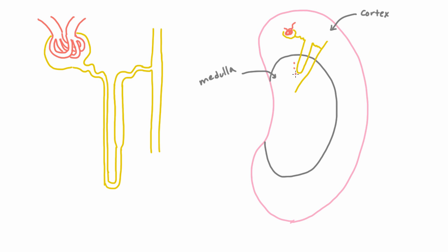So what this loop of Henle is trying to do is to increase the concentration here in the medulla. The way that works is that we're constantly pushing fluid with higher concentration down and letting fluid with lower concentration out. This movement in opposite directions creates what we call the counter-current multiplier. And it turns out that the deeper this loop of Henle goes, the more it's able to concentrate the medulla. This loop of Henle right here goes a little bit into the medulla, so it can help concentrate a fair amount.